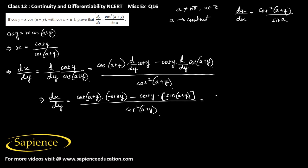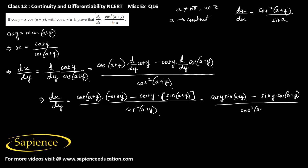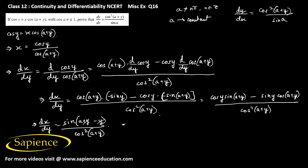Minus into minus gives plus, so the numerator becomes cos(y)·sin(a+y) minus sin(y)·cos(a+y), divided by cos²(a+y). This matches the identity sin(A)cos(B) − cos(A)sin(B) = sin(A−B), so this is sin((a+y) − y), which simplifies to sin(a). Therefore dx/dy = sin(a) / cos²(a+y).